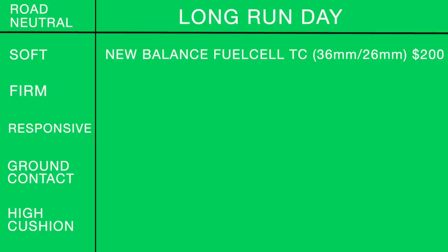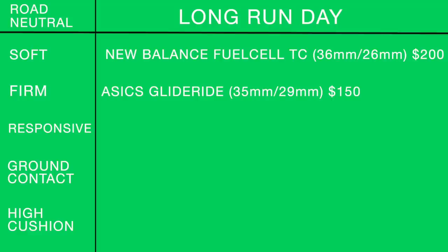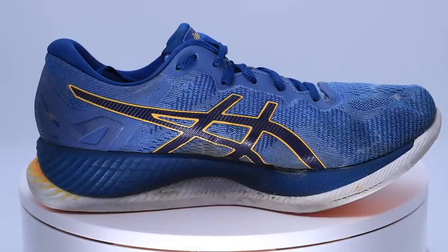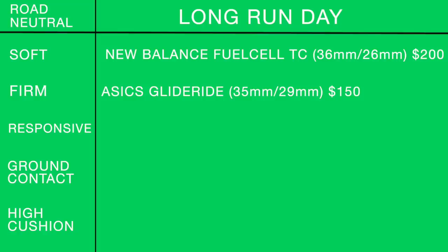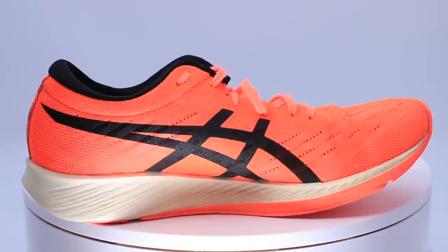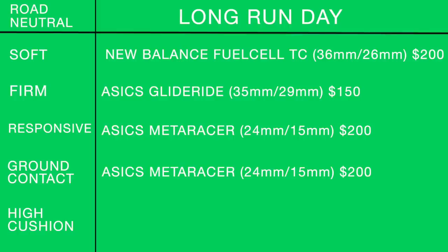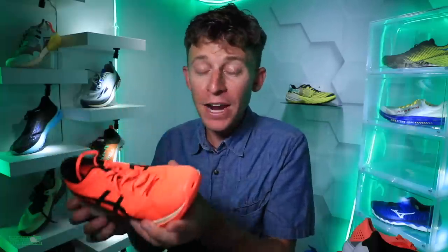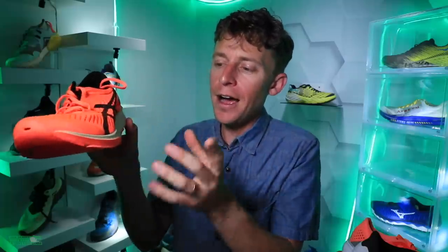For firmer long run ride — going back to 2019 — the Asics Glide Ride. I love this shoe. 35mm heel, 29mm forefoot, 6mm drop, $150. For responsive and ground contact long run, the Asics MetaRacer covers both categories. It's actually a racing shoe — I wouldn't use it for a half marathon or marathon — but for long runs it could be an option. It does have a carbon fiber plate.